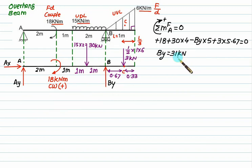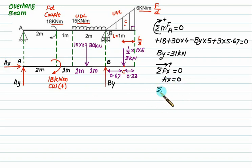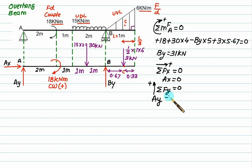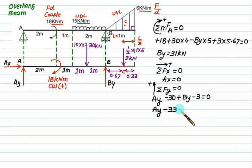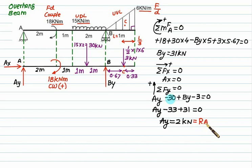To find Ax, apply summation of Fx equal to zero with rightward positive. We have only one entry, so Ax equal to zero. Note that in the force equations, the moment term 18 will never appear — it only appears in the moment equation. For sigma Fy equal to zero with vertically upward positive: Ay is positive, 30 is downward so minus 30, By is upward so plus 31, and 3 kilonewton is downward so minus 3. Solving: Ay minus 30 plus 31 minus 3 equal to 0, giving Ay equal to 2 kilonewton. Since Ax equals zero, Ay itself equals the resultant reaction at A.